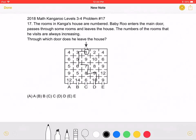Yay! We did it. We got from the door that Baby Roo enters, the main door, all the way outside, only going through rooms with increasing numbers.